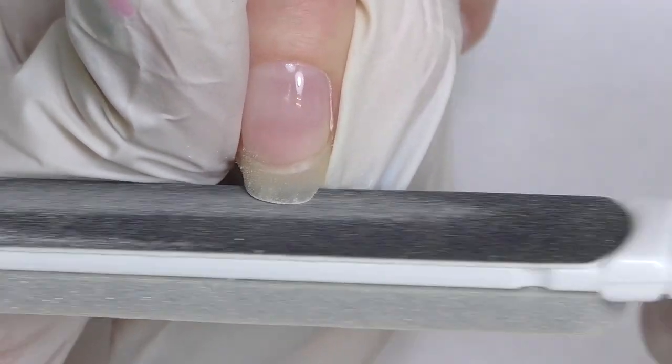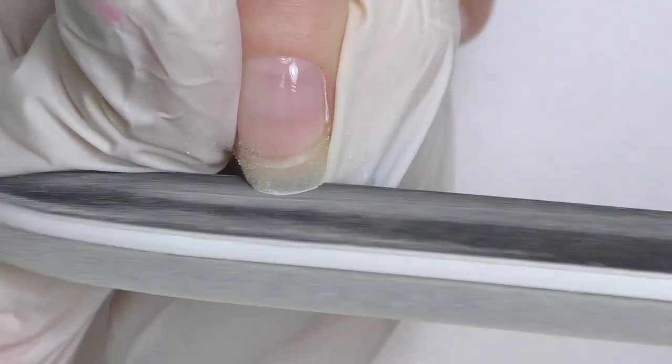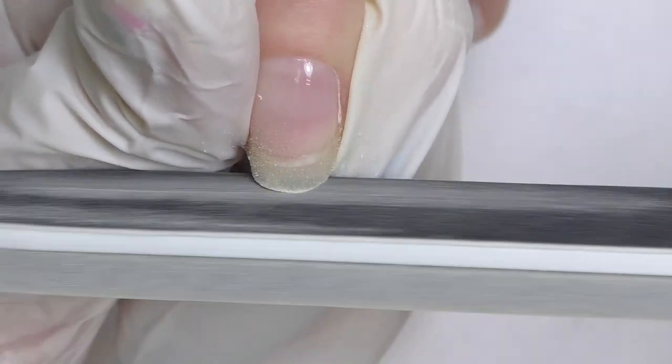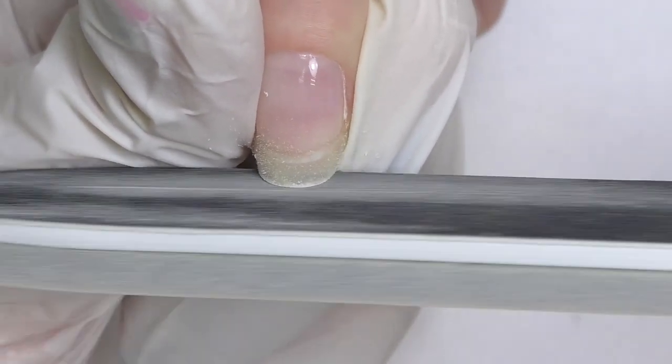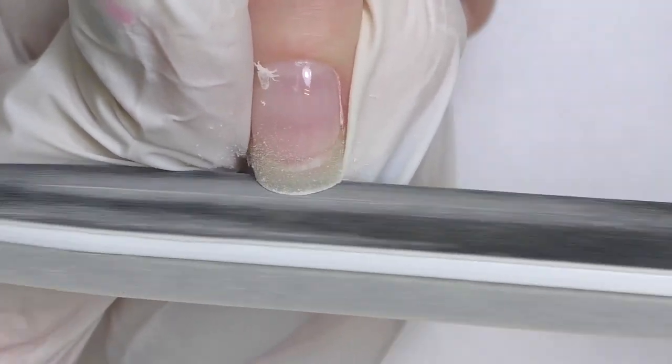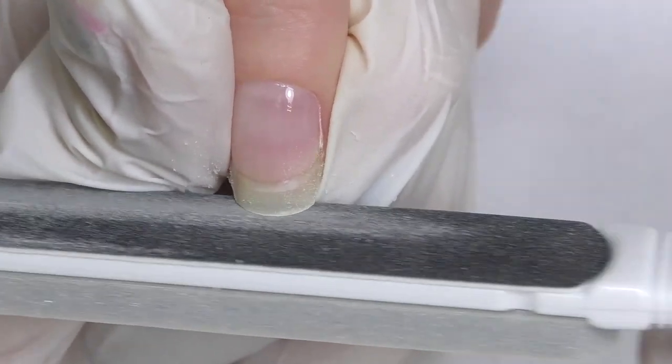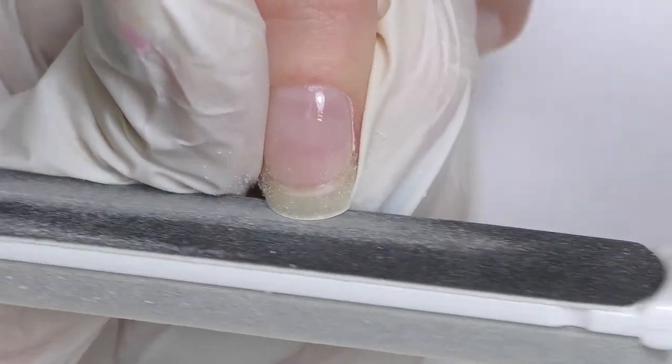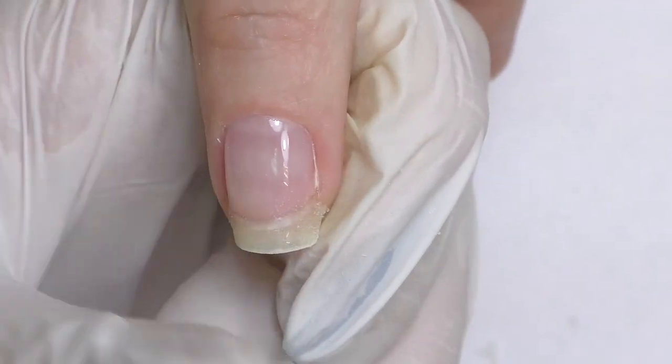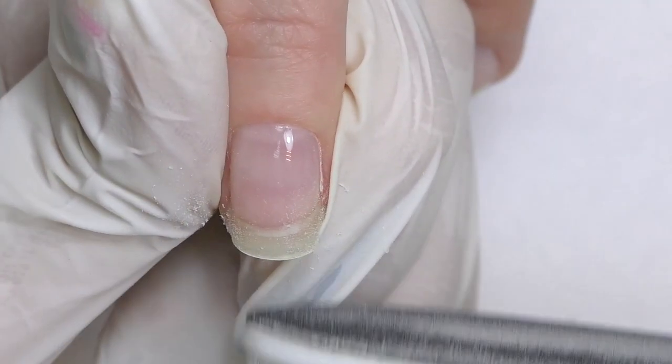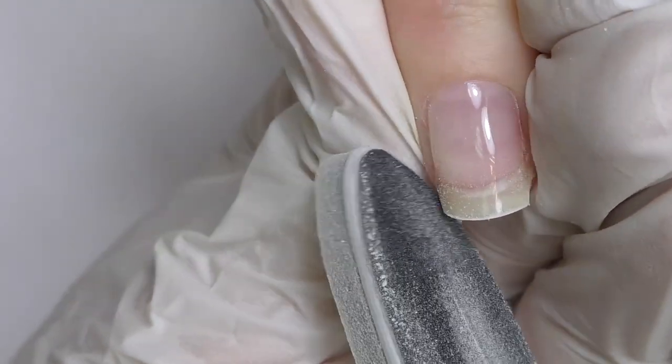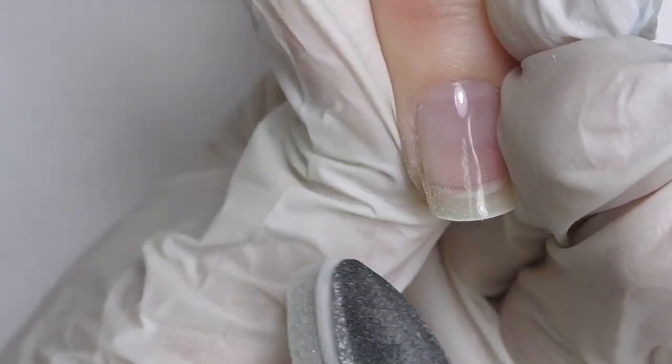So when you're done with all 10 nails, remove the sticky residue. And now we will file the shape and the length of the nails. We decided to do short square nails. As you've seen from the beginning of this video, some of her nails are broken and she wanted this sharp square short nails look. So this is how we will achieve it. Do not forget to check if you have the same length on all nails.